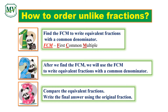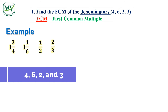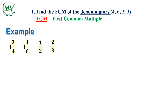Let's have an example. We have 1 and 3 quarters, 1 and 1 sixth, 1 half, and 2 thirds. What do we need to do? First, we need to find the LCM of the denominators 4, 6, 2, and 3. Then we need to write down the multiples of these numbers.